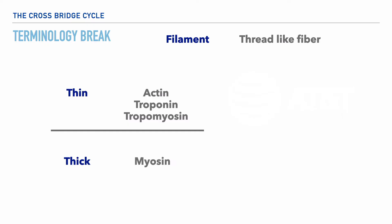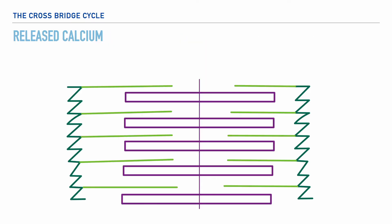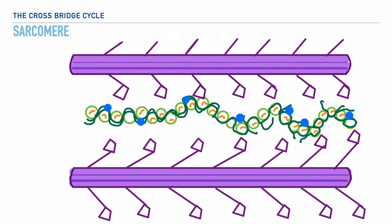Let's go back to our sarcomere. Now we've returned to the sarcomere, and just above it we'll see the calcium that was released and made available from the sarcoplasmic reticulum. Let's zoom into the sarcomere to get a better understanding of the events that follow. Now that we've zoomed in, let's identify the components that are now fully visible. First, we have the thick filament, myosin, and extending from it are what we refer to as the myosin heads. And here we have the thin filament, actin, shown here as a string of light green circles, with actin's active sites on the sides of the actin filament.